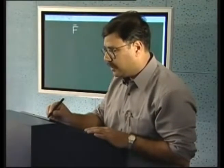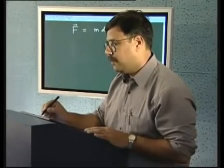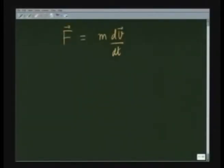Recall that the equation of motion is F = m dv/dt, but at times it may so happen that I am not interested in the evolution of the system as a function of time. For example, if a particle is falling in the gravitational field of the earth, I may be interested in knowing what the velocity is at a certain height from the earth, and I do not have to really worry about time. In such situations, we eliminate time.